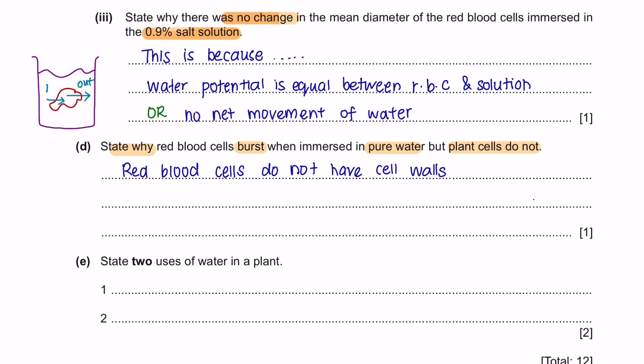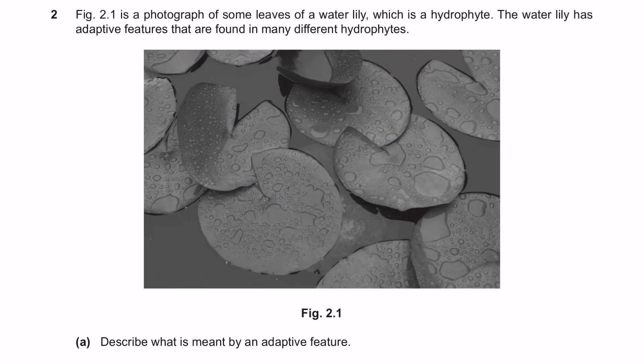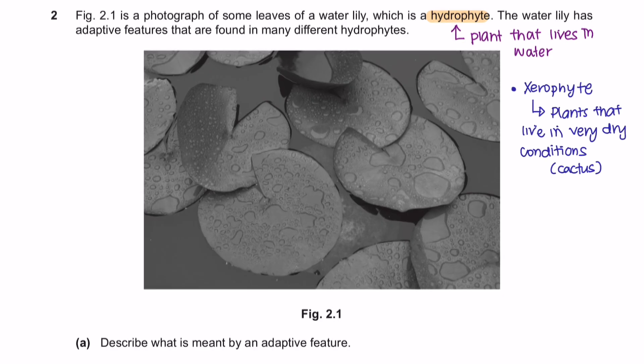Question E. State 2 uses of water in a plant. There are many uses of water in a plant here, but you are only given with 2 marks so you can pick any 2 of these. Question 2. Figure 2.1 is a photograph of some leaves of a water lily, which is a hydrophite. The water lily has adaptive features that are found in many different hydrophites. Hydrophite are plants that live on water. And you will learn about xerophyte, which are plants that live in very dry conditions like cactus.